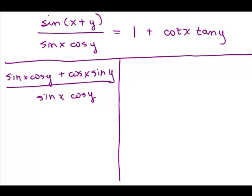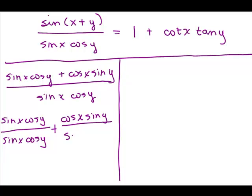Now we have a sum in the numerator and a monomial here on the denominator, so I can split the denominator. Each of these terms in the numerator goes over the denominator. So that's sine X cosine Y over sine X cosine Y plus cosine X sine Y over sine X cosine Y.